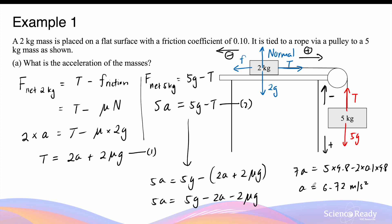This acceleration is positive, which means the 2kg mass will accelerate to the right at 6.72 m/s². For the 5kg mass, the positive direction is downward, so the 5kg mass accelerates downward at 6.72 m/s².